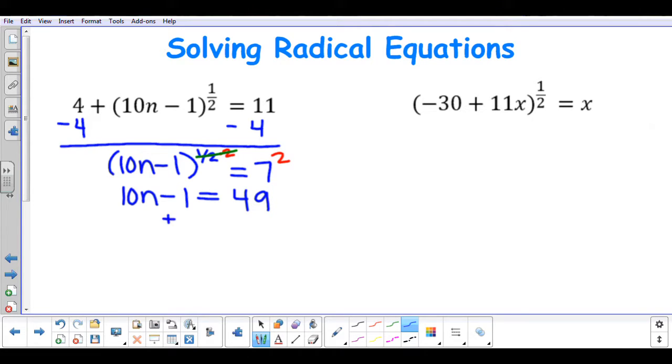To solve for n, I am going to add 1 to both sides. 10n is going to equal 50. I am going to divide by 10, and my n is going to equal positive 5.